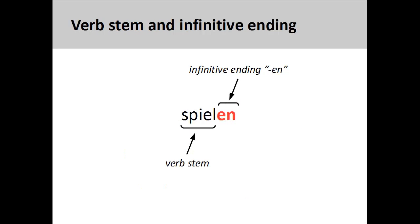Instead, German has an infinitive ending which is attached to the verb stem to form the infinitive. Here, the infinitive ending '-en' is attached to the verb stem 'spiel' to produce 'spielen', to play.